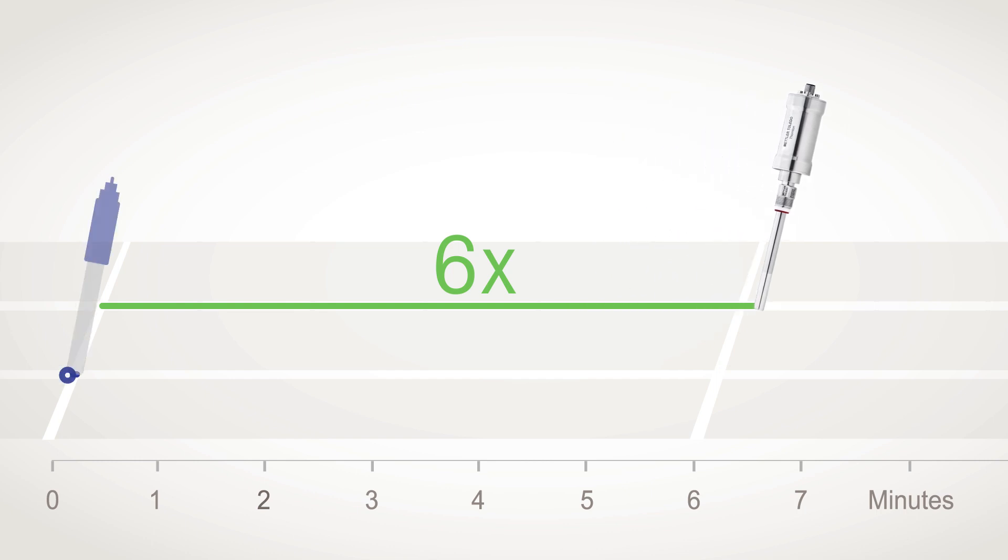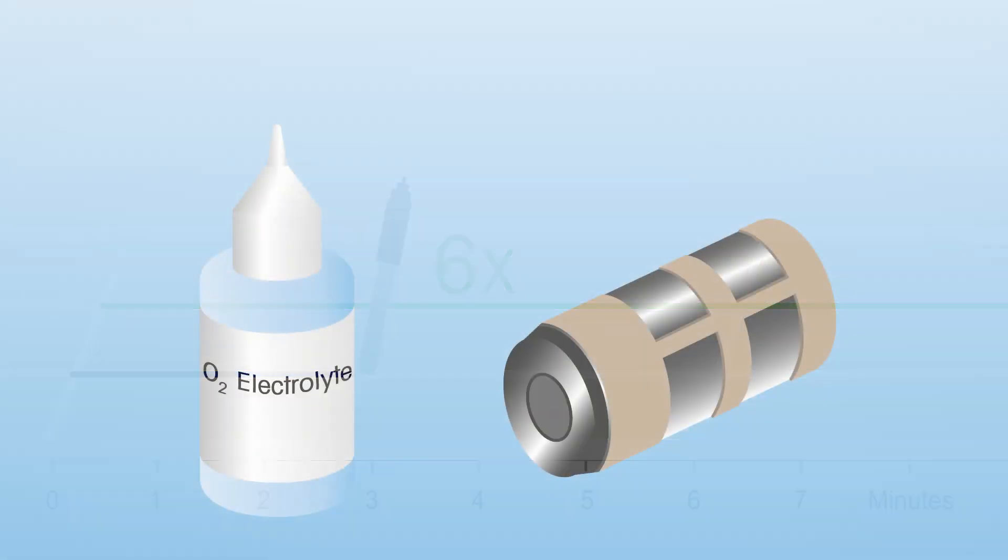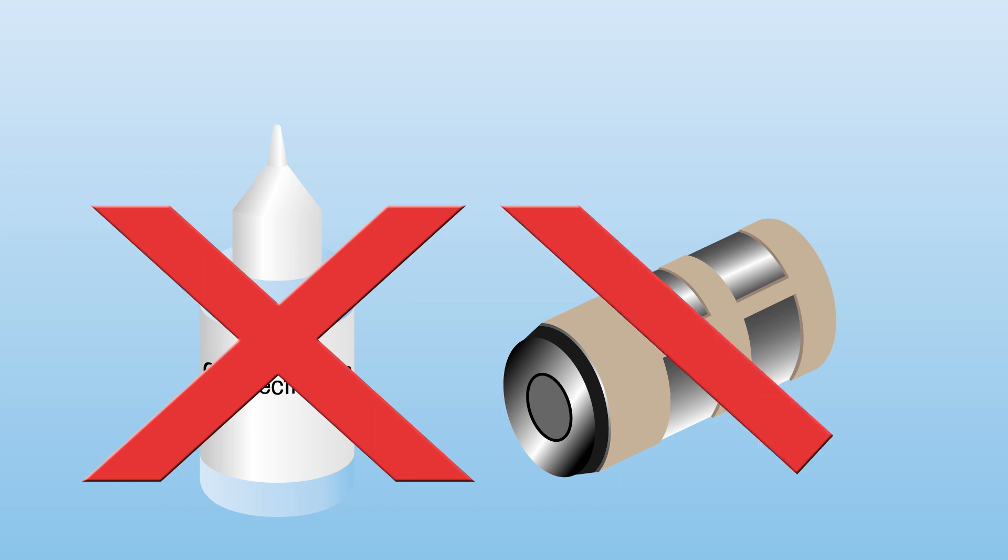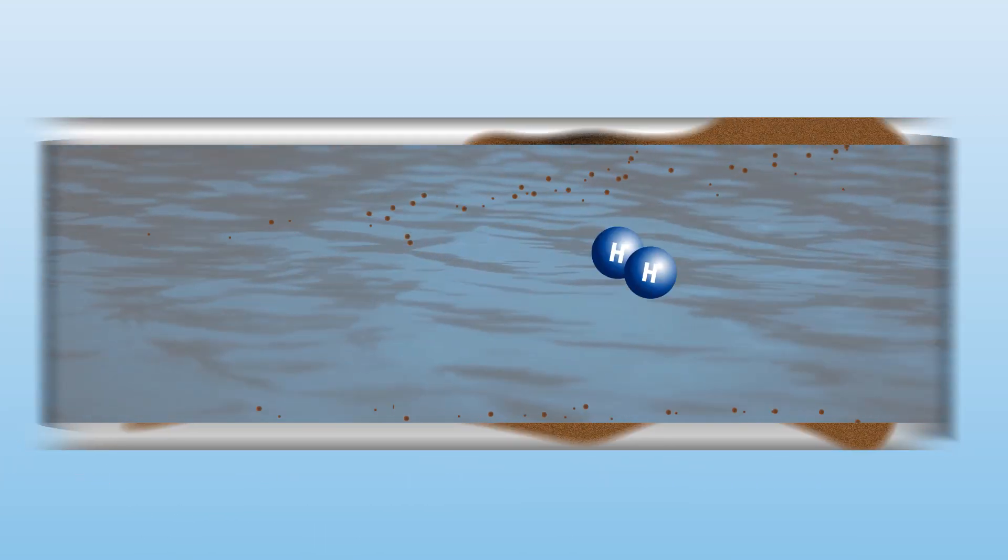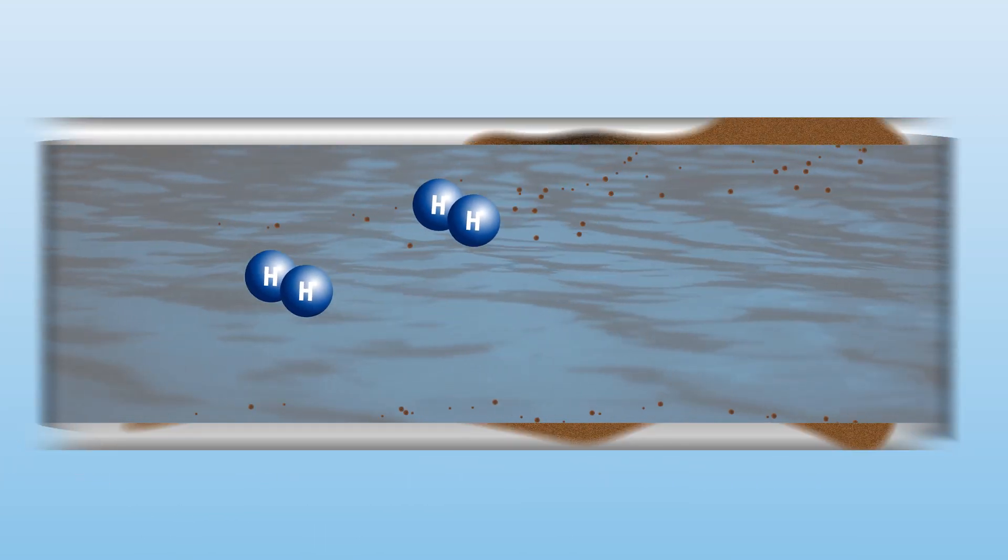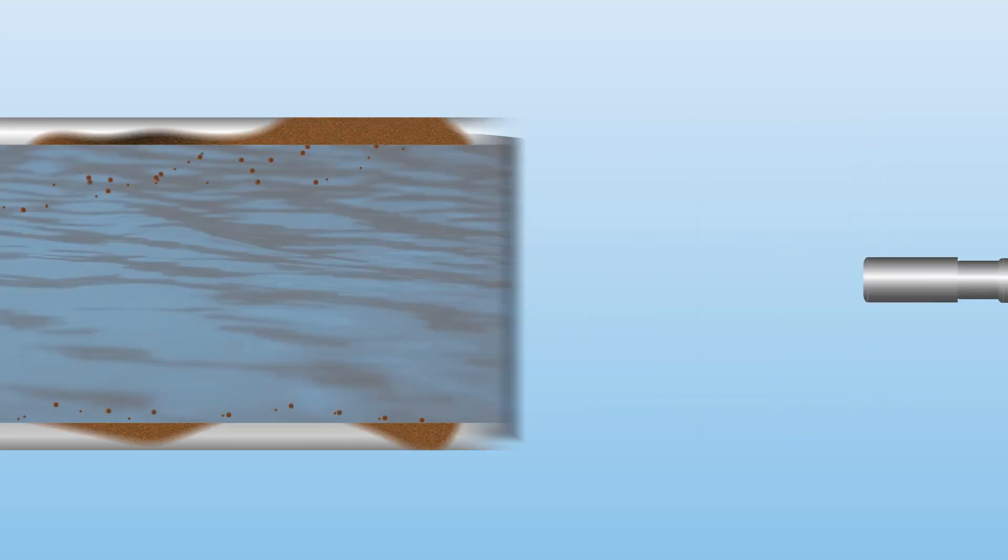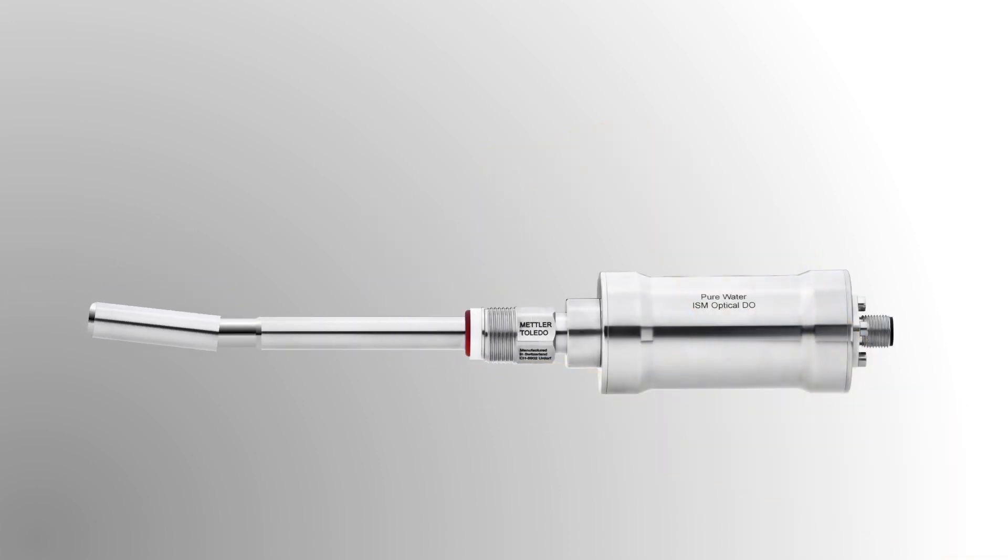The optical DO sensor also does not use electrolyte or a membrane, so it's not sensitive to flow or susceptible to damage from particles and dissolved hydrogen interference. There is no interior body to replace, and service is required only once a year to quickly and easily replace the one-piece opto-cap sensing element.